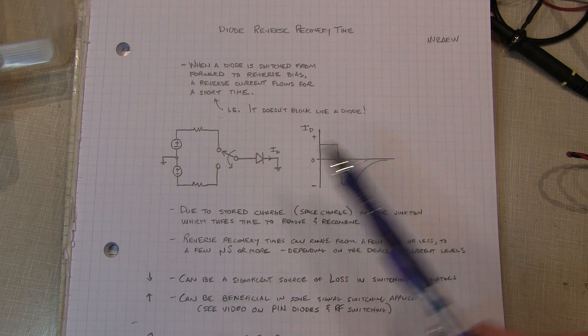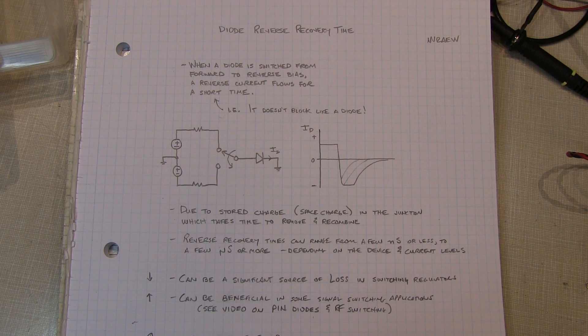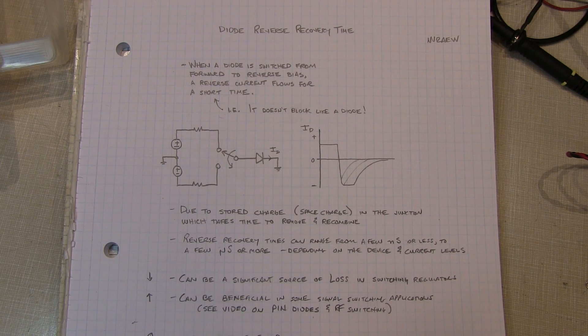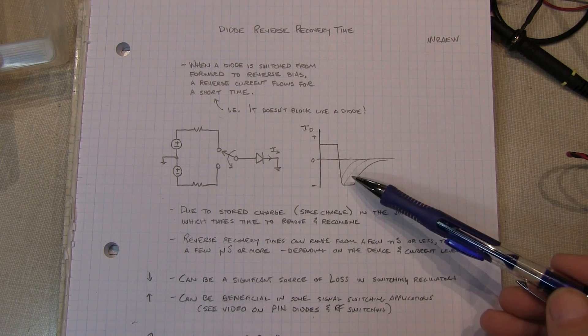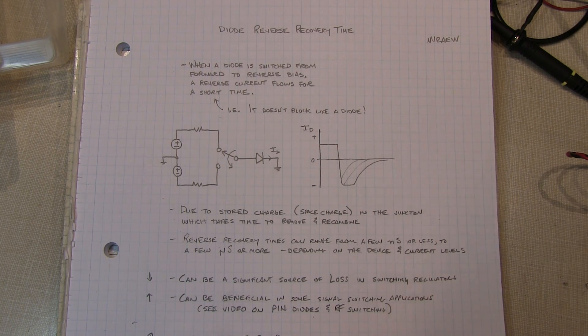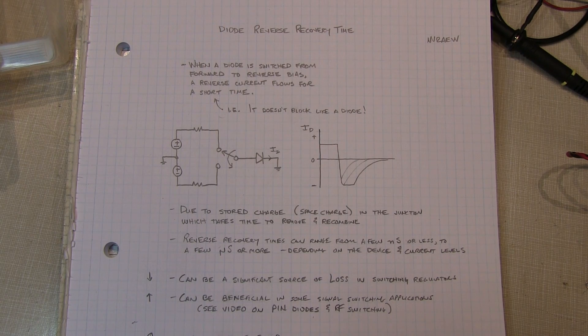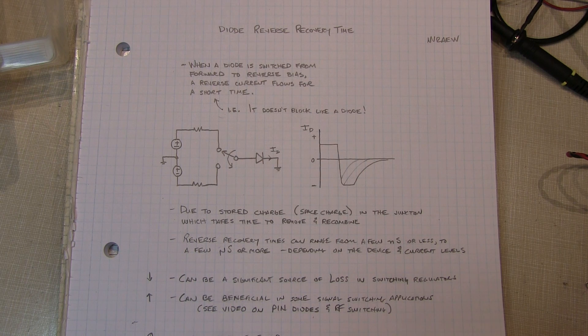So we'll see that the reverse recovery time is proportional to the forward current. It's also proportional to the amount of voltage applied in the reverse direction, so how quickly we can remove that charge. Testing for reverse recovery time is going to be very highly dependent on the test setup. Now many of the manufacturers of diodes, when they specify reverse recovery time, will also include what their test configuration was.